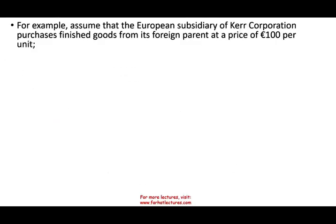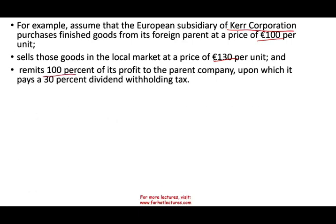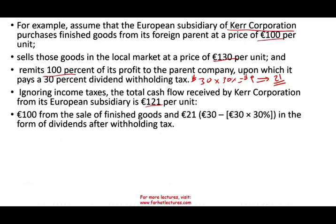Here's a concrete example. Assume the European subsidiary of K Corporation purchases finished goods from the foreign parent at 100 euros per unit, then sells them to consumers for 130. They buy at 100 and sell at 130. They remit 100% of the profit — which is $30 — to the parent company. But there is a 30% withholding tax, so 30% of $30 is $9. They must withhold $9, meaning they can only remit $21 in profit. So they can remit $121 net — the $100 cost recovery plus $21 remaining profit.